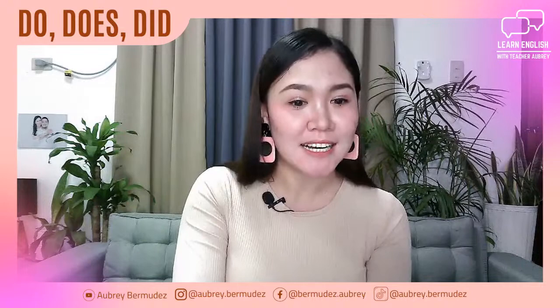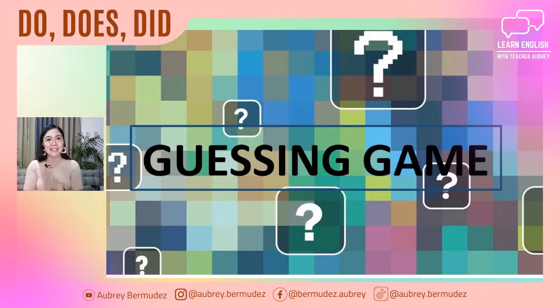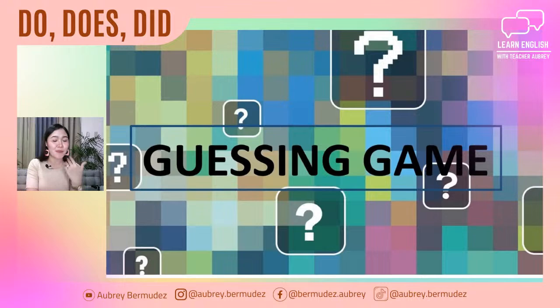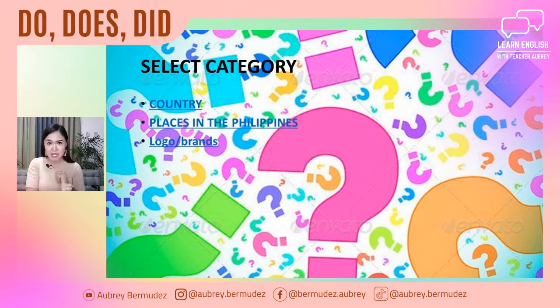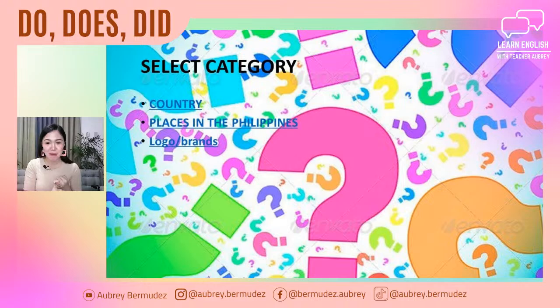We are going to have a guessing game tonight. I want you to use the chat box to put your answers. Let's make this lesson very interactive — don't just watch, let's answer. For the guessing game, we will have three categories: the first is guessing countries from pictures, next is places in the Philippines, and the third is about logo brands.